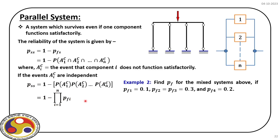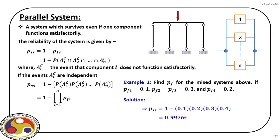For the parallel system example with four subcomponents having the same pf_i values, P_SS = 1 − product of all pf_i = 0.9937. The probability of failure at the global level is 1 − P_SS.